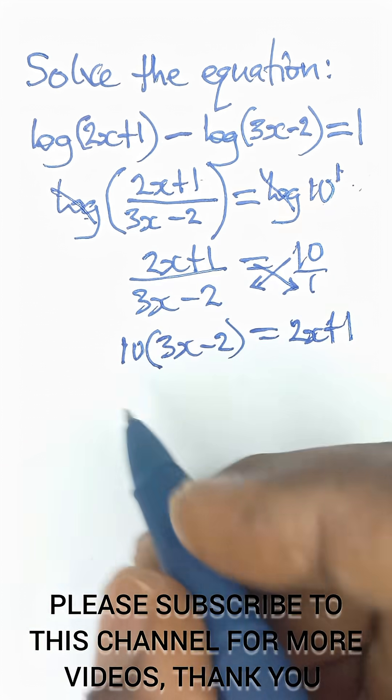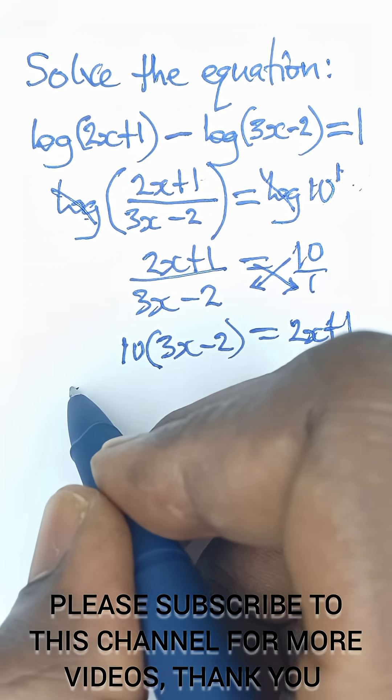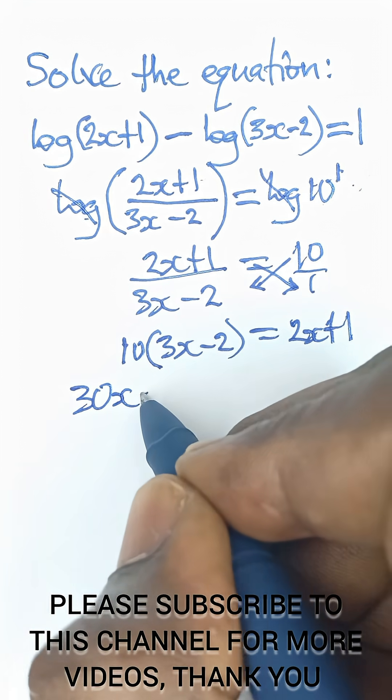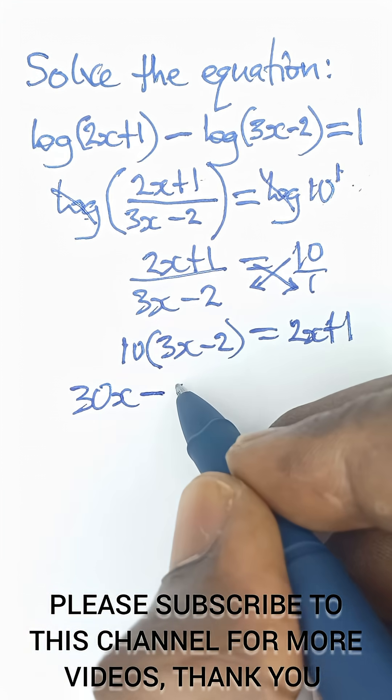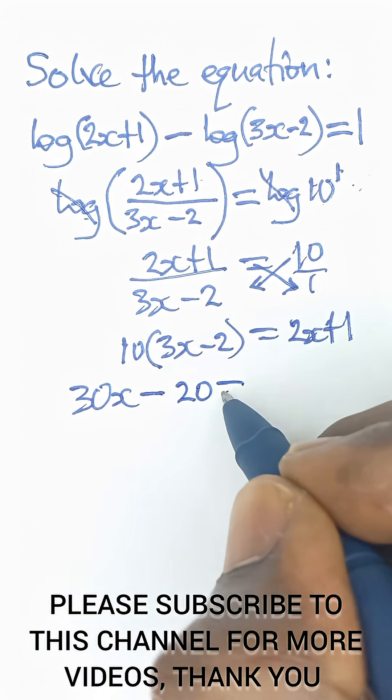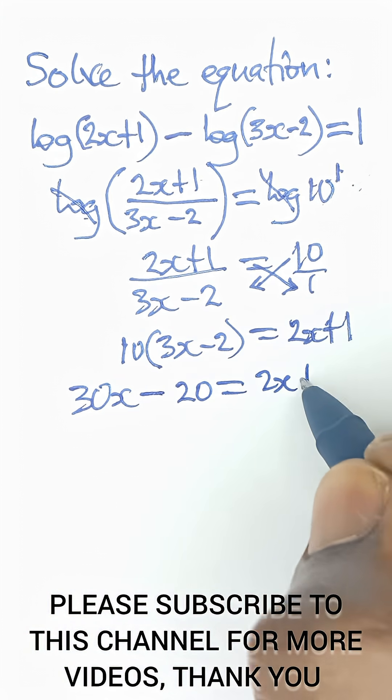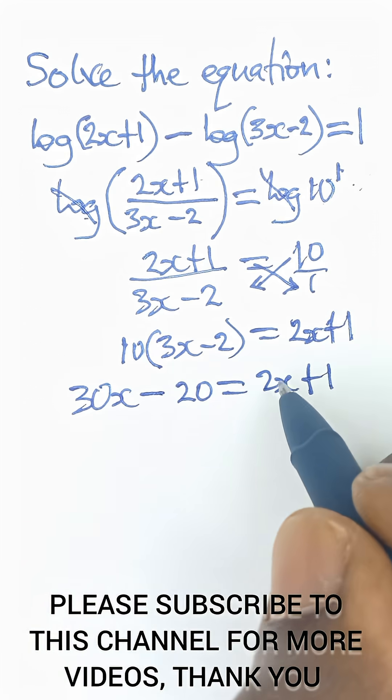So going further now, if I expand this, it gives me 30x minus 20 is equal to 2x plus 1. So I can collect like terms now.